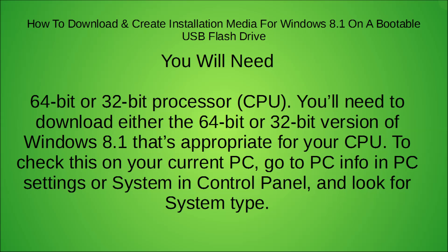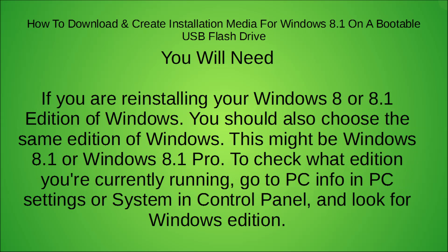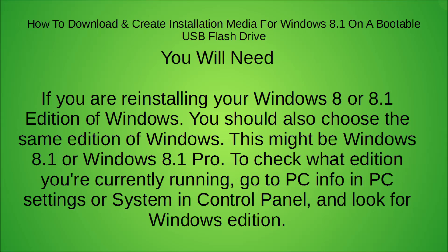If you're reinstalling your edition of Windows, you should choose the same edition — either Windows 8.1 or 8.1 Pro. To check what edition you're running, go to PC Info in PC Settings or System in Control Panel and look for Windows edition. Basically, you need to install the same version you already have or the version you have a valid key for. If you don't know, contact whoever sold you the key.